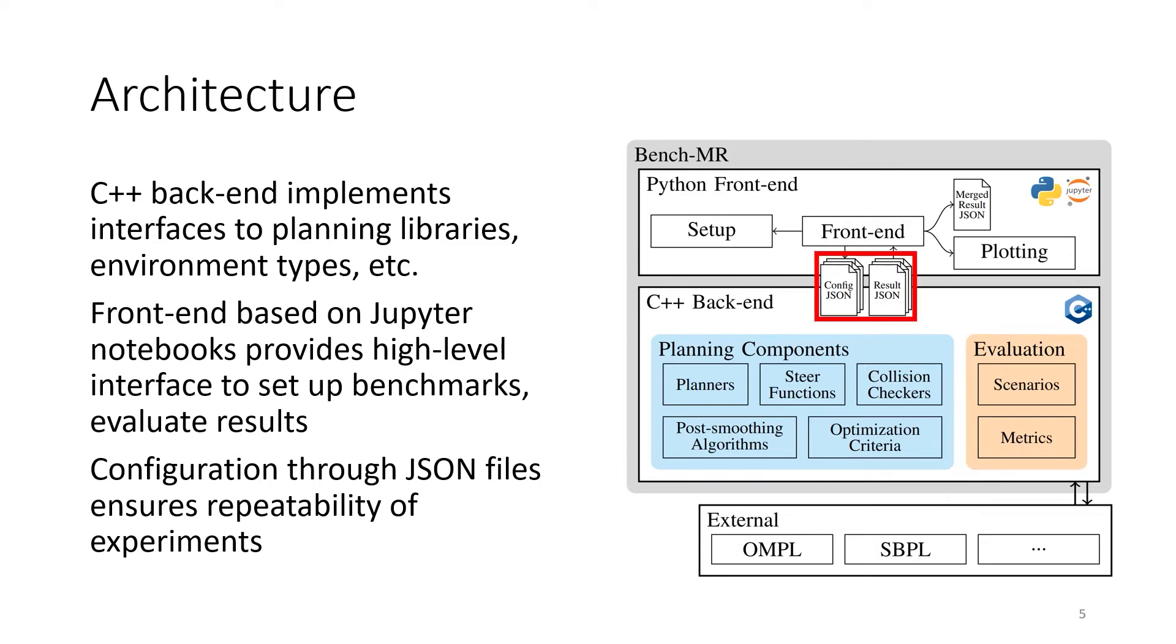The configuration of benchmarks happens through JSON files which provide a human-readable interface to set up reproducible experiments. Although it is possible to directly define experiments via the C++ code or the JSON configuration, it is often more productive to leverage a higher-level programming language to access such benchmarking functionality. Therefore, we provide a Python interface where the user can set up new scenarios and configure experiments.